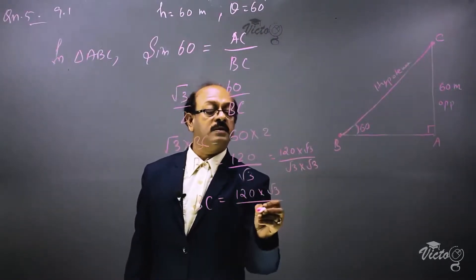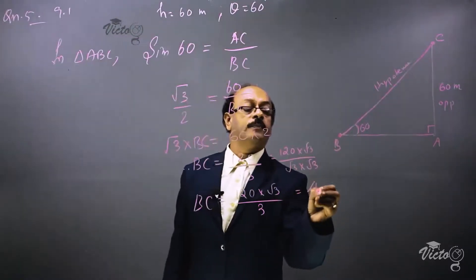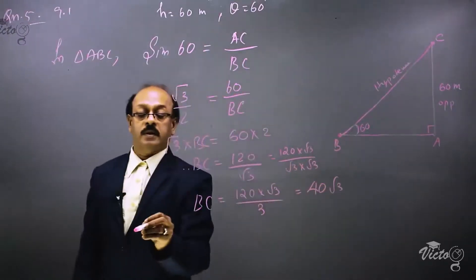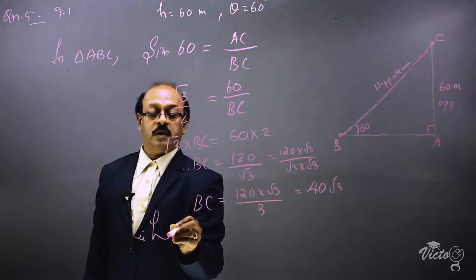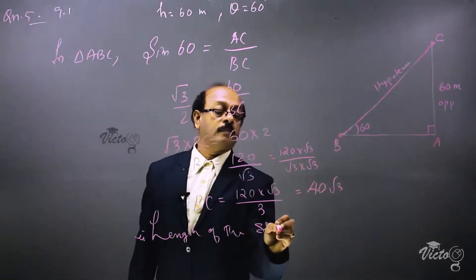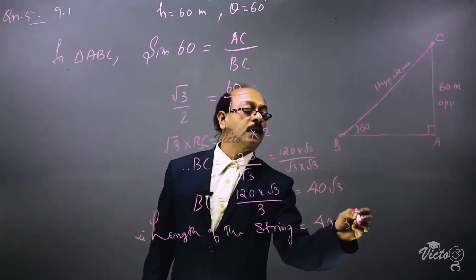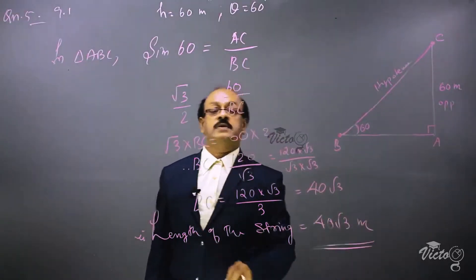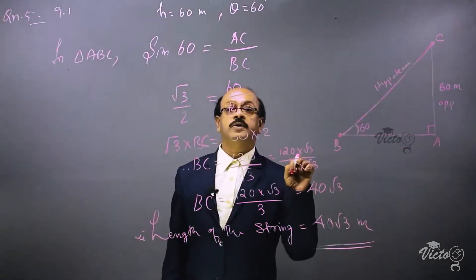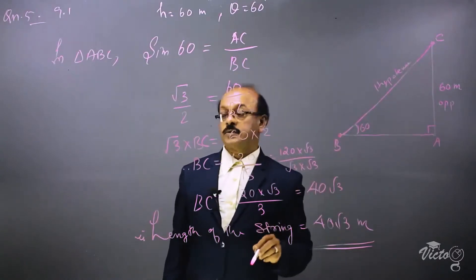Root 3 into root 3 is 3. We can cancel 3 into 120, giving 40. So BC equals 40 root 3. The length of the string is 40 root 3 meters. It's a simple question, but they most probably ask one question based on the problem of a kite, so please note it.